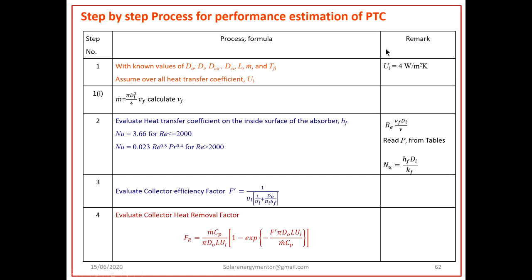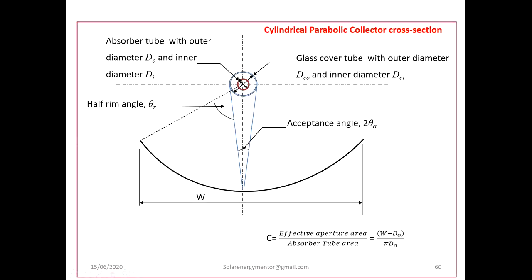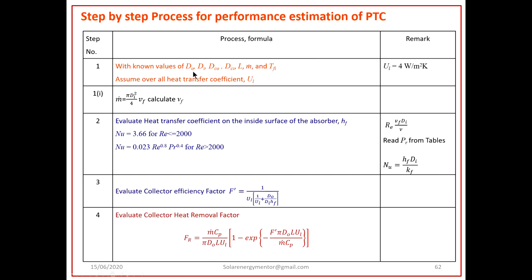Now let us see the step-by-step process for performance estimation of the PTC. In step one, the known parameters are: outer and inner diameters of the absorber (DO, DI), outer and inner diameters of the glass cover (DCO, DCI), collector length L, mass flow rate M-dot in kg/s, and the fluid inlet temperature TFI. With this data, we assume the overall heat transfer coefficient UL — for example, 4 W/m²K to begin the estimation.